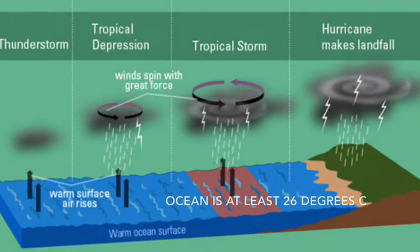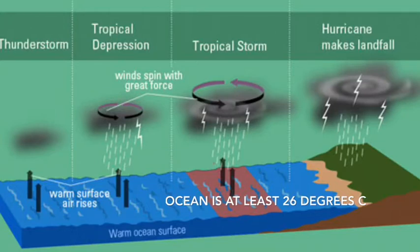So here we've got a tropical storm forming. The ocean is warmed to at least 26 degrees Celsius, which happens at the equator. The warm air starts to rise, cools, condenses, and creates clouds — this forms a tropical depression. It starts spinning due to the spinning of the earth and moves towards land.